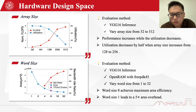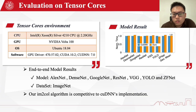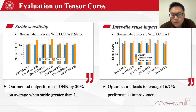We show experimental results on Tensor Cores. Our implementation is nearly identical to the baseline, being on average only 1% slower, indicating that our implicit image-to-column algorithm is competitive with NVIDIA's implementation. For strided convolution, we selected typical operations for demonstration, and results show our method outperforms cuDNN by 20% on average at strides greater than 1. The right figure evaluates the effectiveness of our inter-tile reuse optimization on GPUs, which leads to an average 16.7% performance improvement.